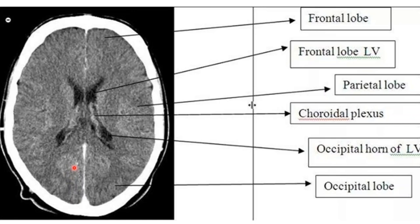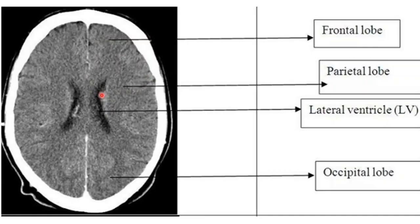The parietal lobe, frontal lobe, and occipital lobe can be seen on this CT axial image. As we go slightly higher, you can again appreciate the frontal lobe, occipital lobe, and parietal lobe in continuity. The lateral ventricle is visible — specifically the temporal horn — and the falx cerebri, the fibrous dural septum, is also visible on the image.